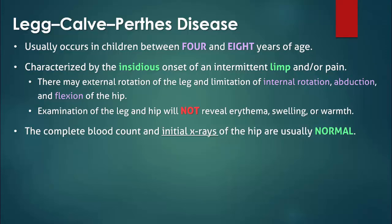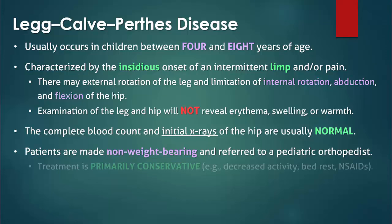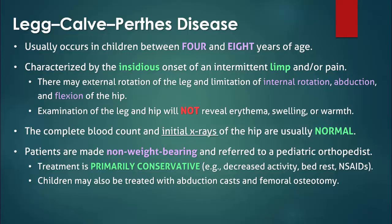Patients must be made non-weight-bearing and then referred to a pediatric orthopedist. Treatment is primarily conservative. Acute exacerbations are treated with over-the-counter analgesics and rest. Limitation in physical activities should continue until the patient no longer experiences pain and there is full range of motion at the hip. Depending on the age and severity of the disease, attempts can be made to contain the femoral head within the acetabulum. Non-surgical strategies include abduction casts and splints, whereas surgical containment may involve femoral osteotomies.